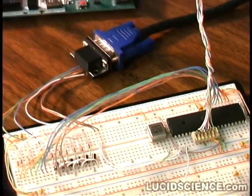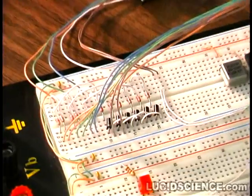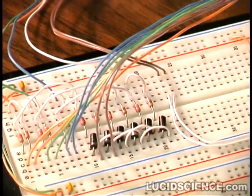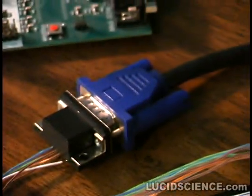This is part one of the VGA signal generator project using an Atmega324 connected directly to a resistor DAC and the VGA monitor.